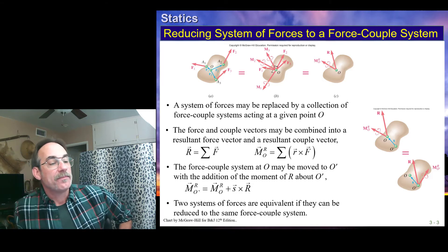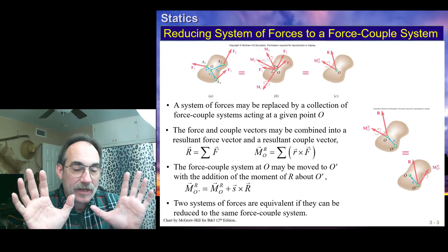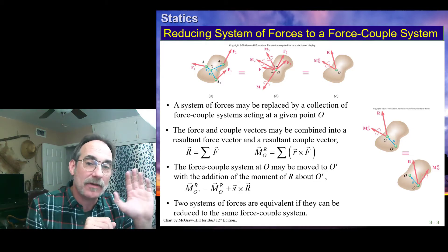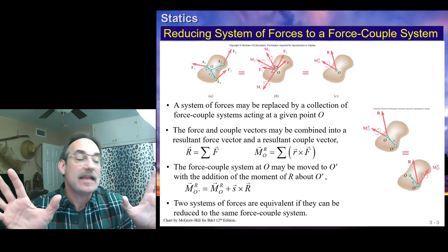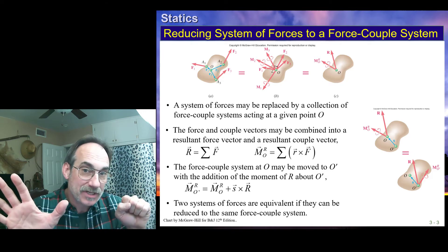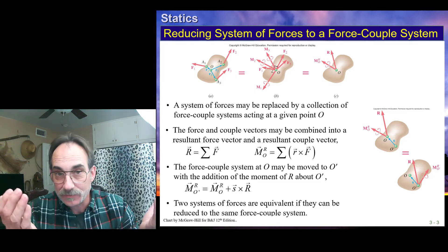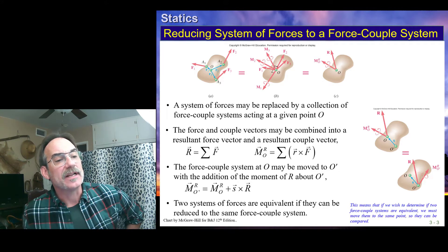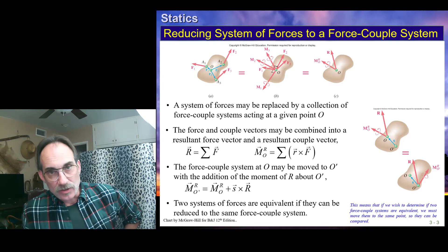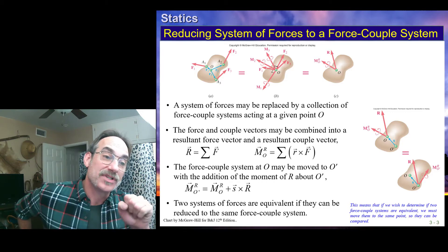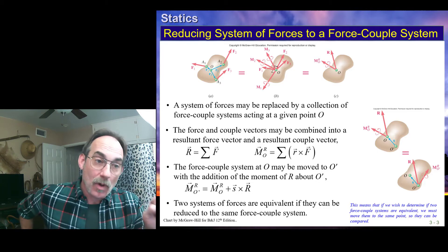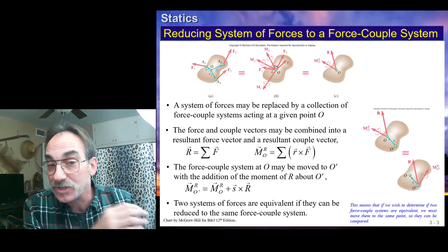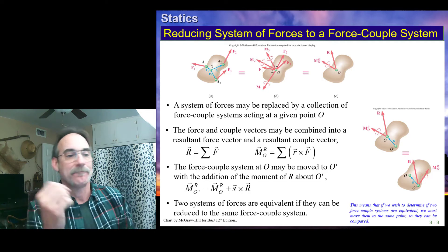This brings us to the concept that two systems of forces — and when we say systems of forces, we really mean forces and moments — if one system can be reduced to the same force couple system as another, they're called equivalent systems of forces. If we want to find out if two force systems are equivalent, we can pick any point, sum up one system about that point to get the force and moment there, then sum up the other system about the same point. If we end up with the same force and moment, the two systems are equivalent. If not, they're different.